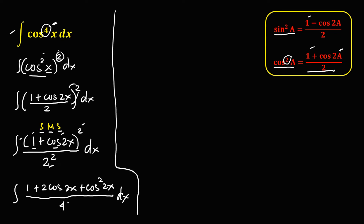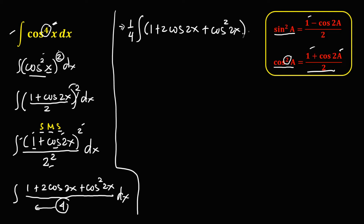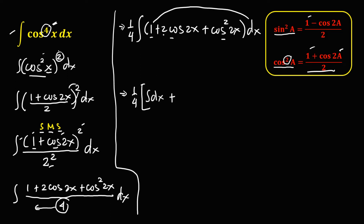Then simplify — we can put the denominator 4 outside. So this becomes 1 over 4 times the integral of 1 plus 2 cosine 2x plus cosine squared 2x, dx. We can now integrate every term, so we have 1 over 4 times the integral of dx, plus 2 times the integral of cosine 2x dx, plus the integral of cosine squared 2x dx.